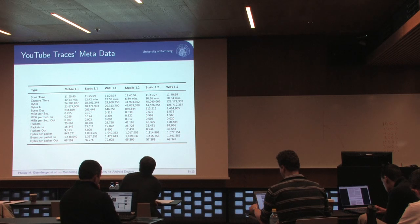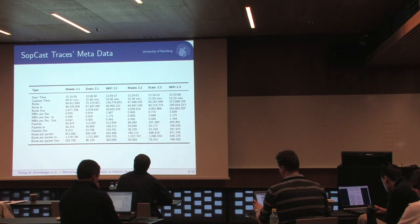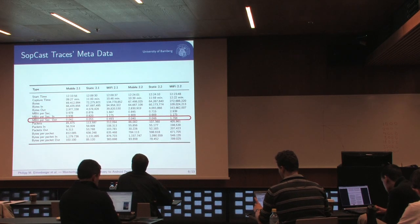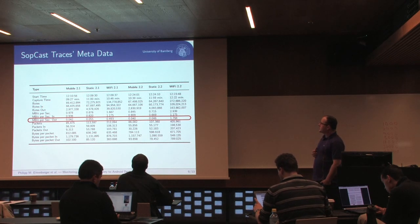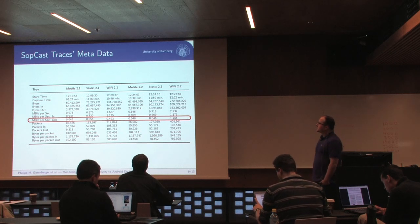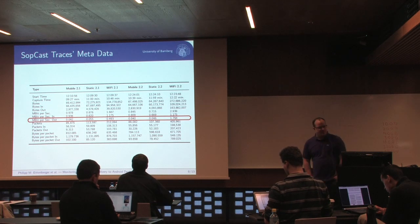Here you see some high-level metadata about the YouTube traces. This is about the Subcast traces, which is much more interesting. In the Wi-Fi case, you see the device is really participating in data dissemination — it uploads data to other peers — whereas when connected via 3G, it is not uploading video data to other peers.